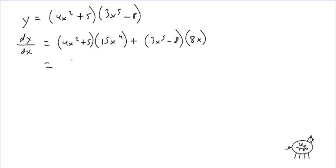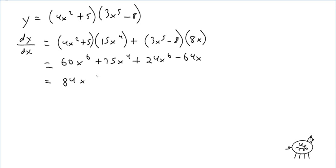If I multiply that out, I get 60x⁶ + 75x⁴ + 24x⁶ − 64x. Combine like terms and you wind up getting 84x⁶ + 75x⁴ − 64x. And that's dy/dx — pretty easy.